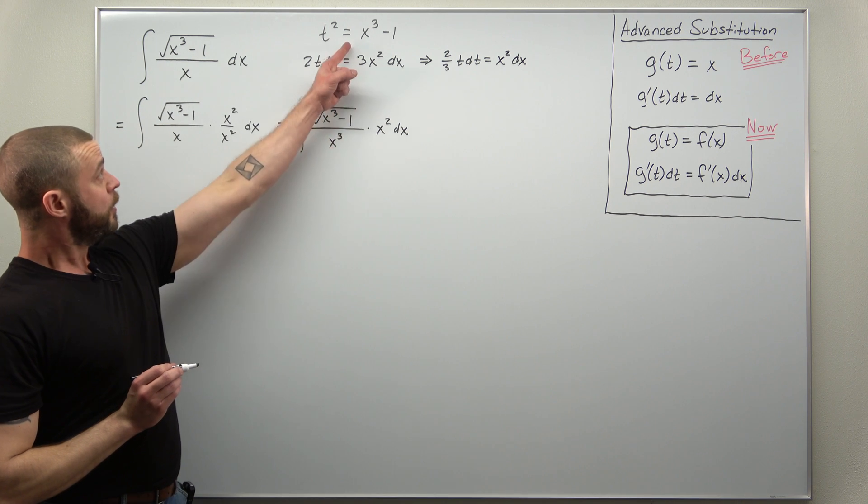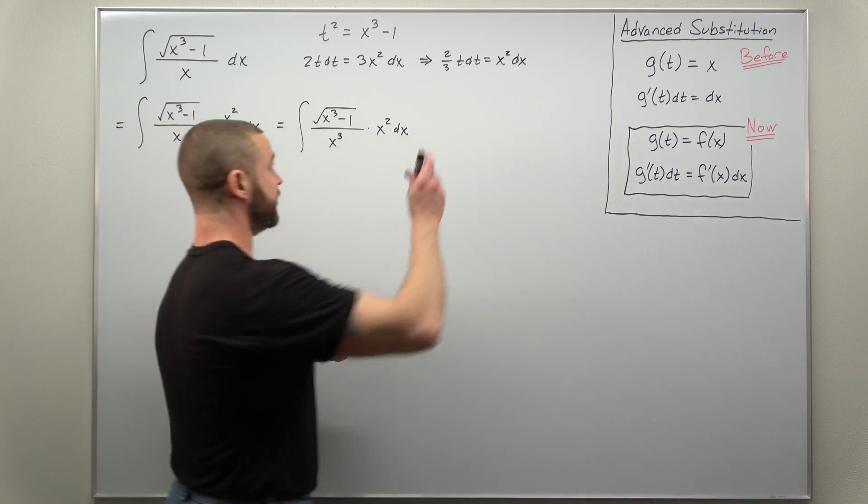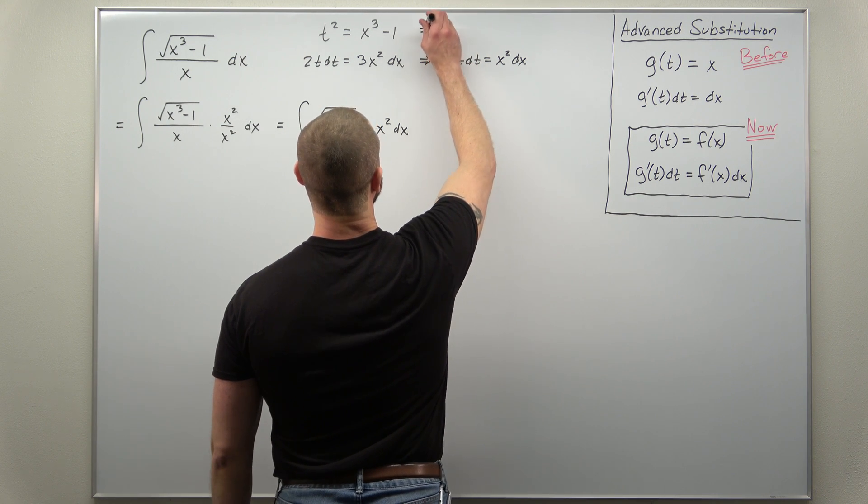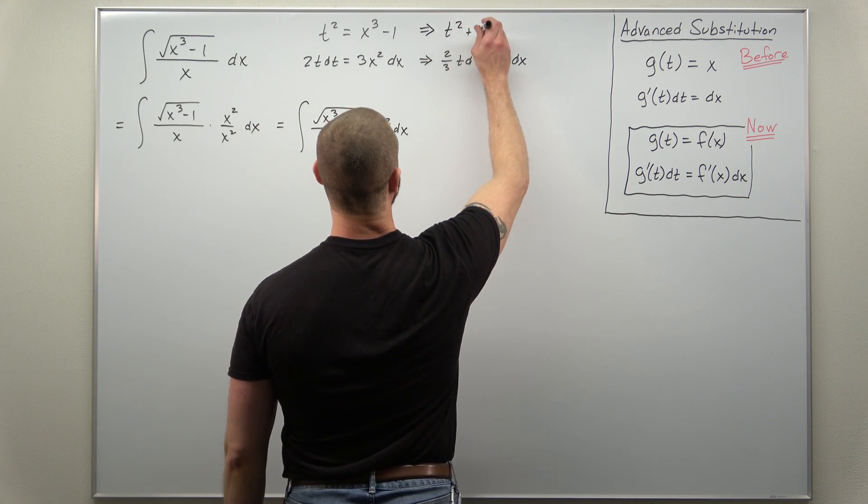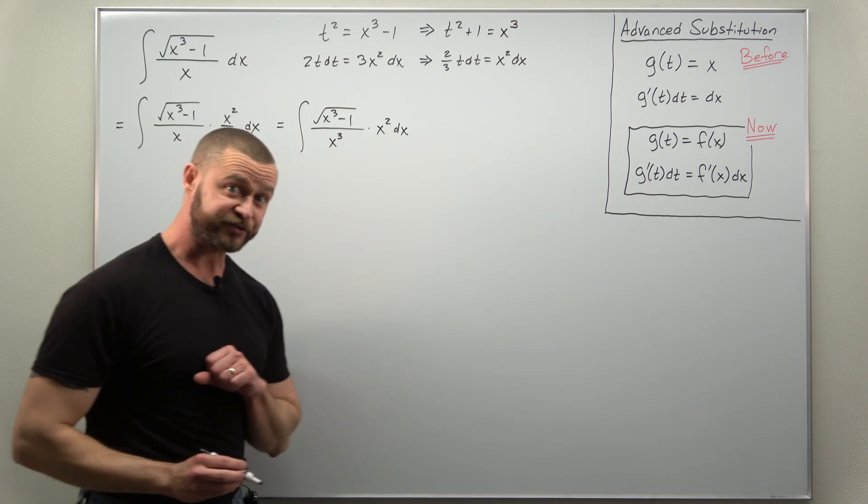And while we're at it we're going to solve our substitution for x cubed, add 1 to each side. So we'll get this as t squared plus 1 equals x cubed.